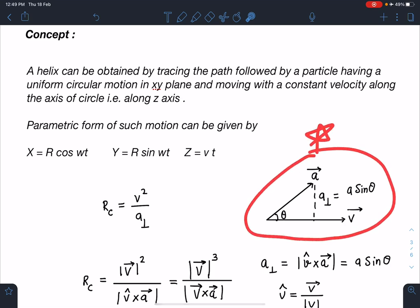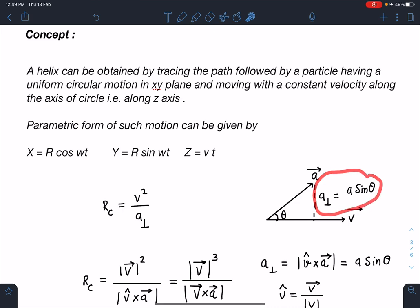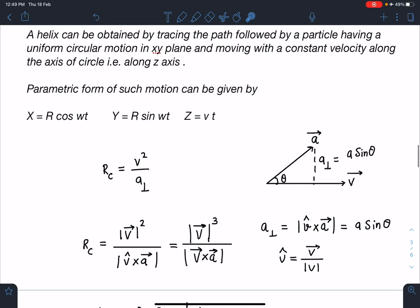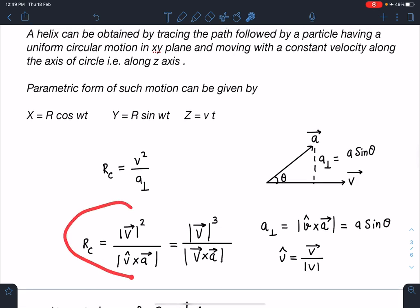If there are two vectors in space, acceleration and velocity v, this component I can write as a_perpendicular. Using cross product, I can write this component as |v̂ × a|. So the general formula of radius of curvature can be written as R_c = v²/|v̂ × a| or |v|³/|v × a|.